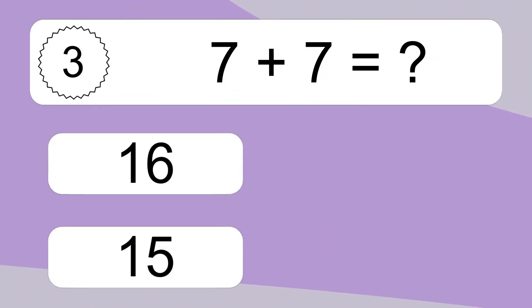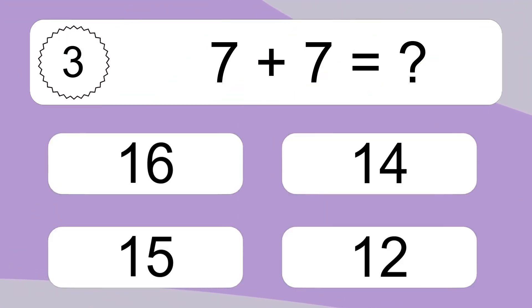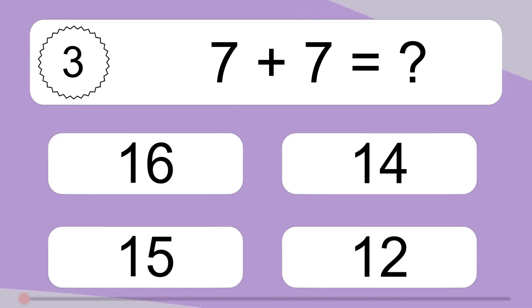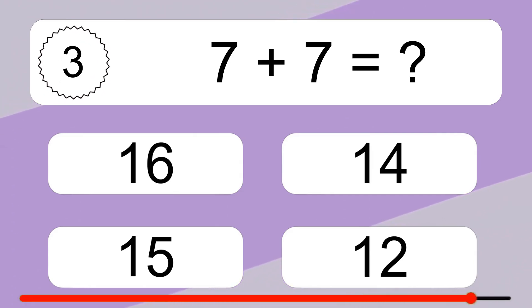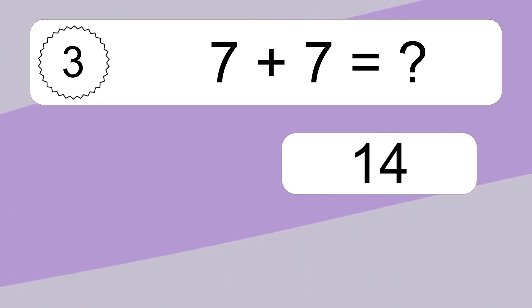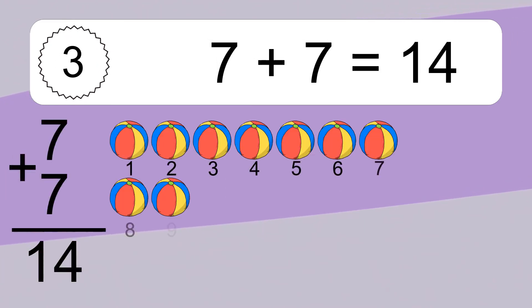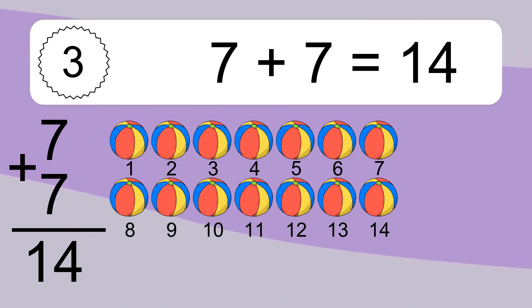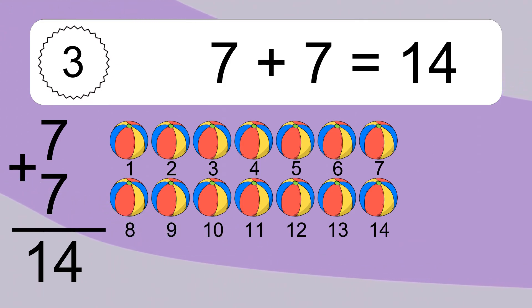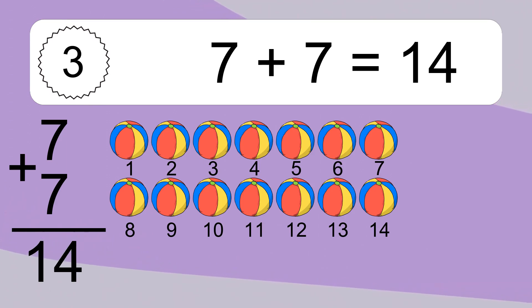7 plus 7 equals what? 7 plus 7 equals 14. Let's count it. 1, 2, 3, 4, 5, 6, 7, 8, 9, 10, 11, 12, 13, 14.